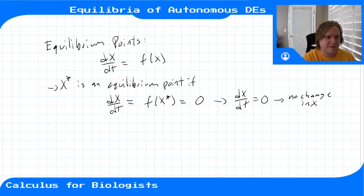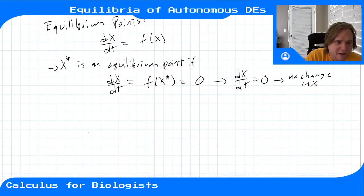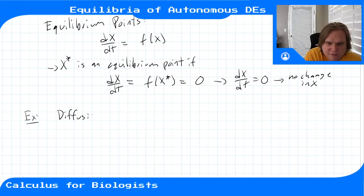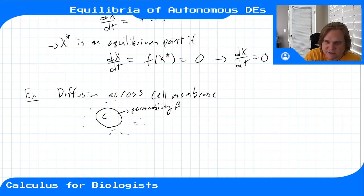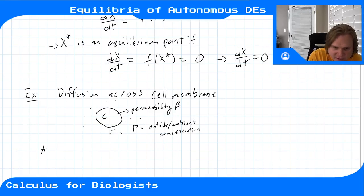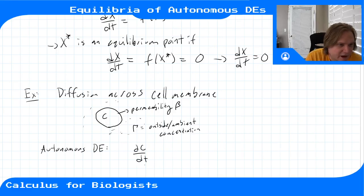Let's think about the example we ended with: the diffusion of chemicals across a cell membrane. We have a cell with concentration c and permeability β, and outside the cell the ambient concentration is γ. We wrote down the autonomous differential equation: dc/dt = β(γ - c), representing the change in concentration of the ion inside the cell.